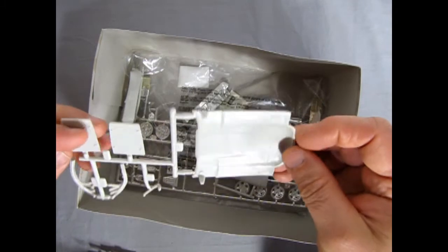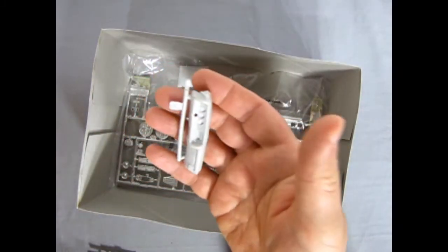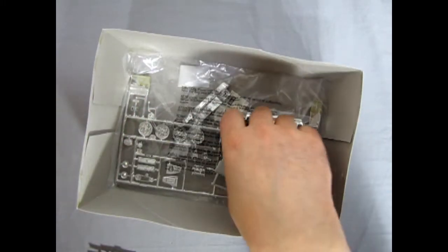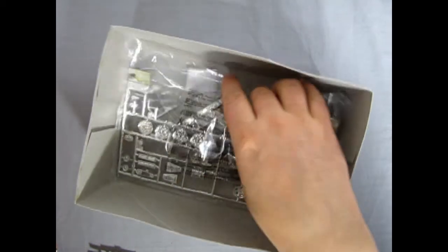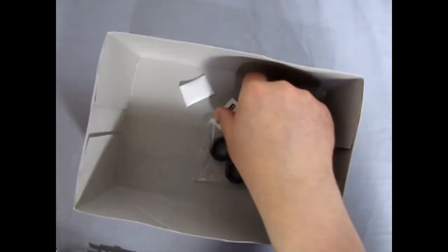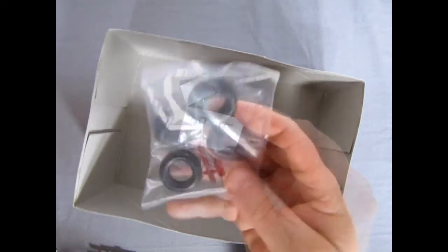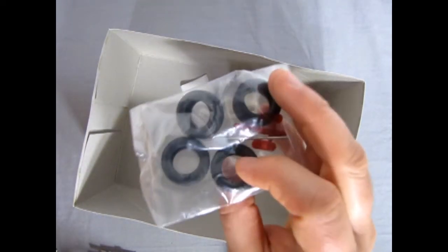There's our groovy hood. Groovy groovy. Dashboard. Man, everything is just like little bits in here. Rear seat. There's our chrome. Oh, our decal sheet. Hey everybody. There's our tires.